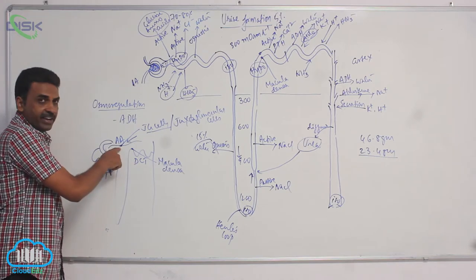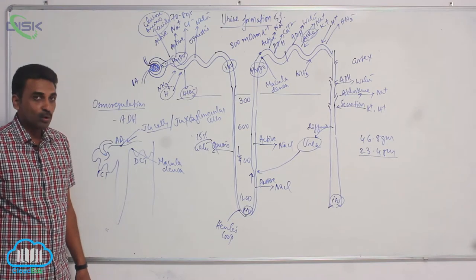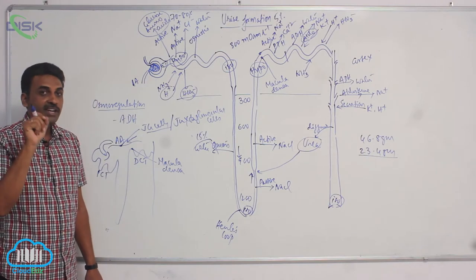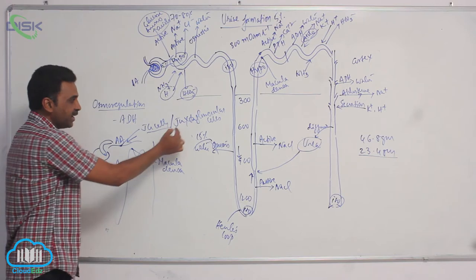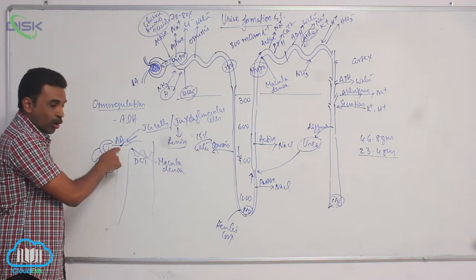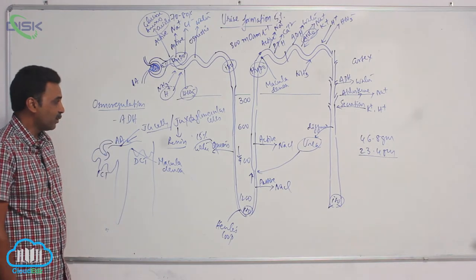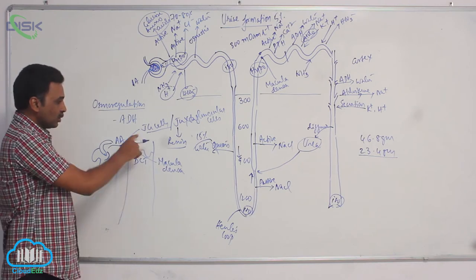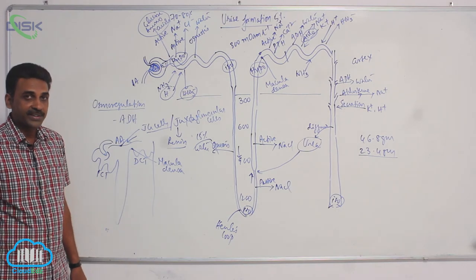In the efferent arteriole, you will find JG cells. JG cells are also called juxtaglomerular cells. Juxtaglomerular cells are modified smooth muscle cells, which can produce an enzyme called renin. So they are modified smooth muscle cells present inside the wall of efferent arteriole, which can synthesize renin enzyme. Now JG cells and macular densa are together called juxtaglomerular apparatus.